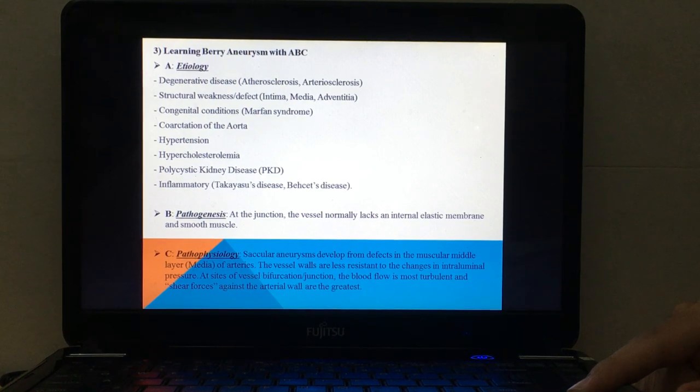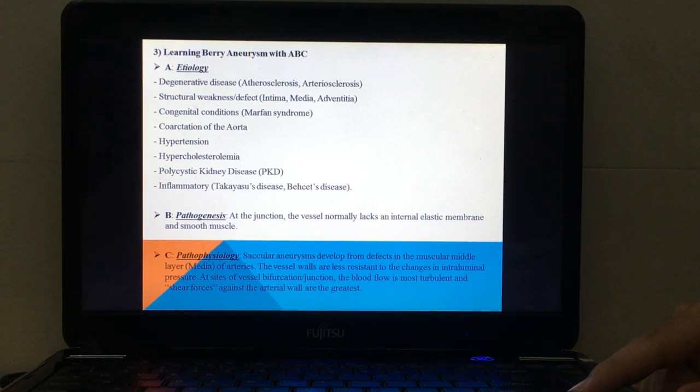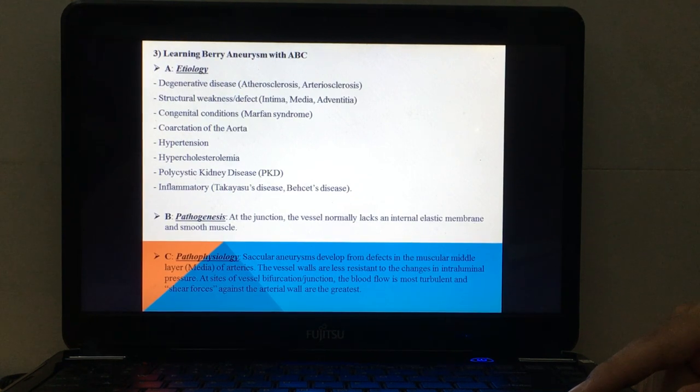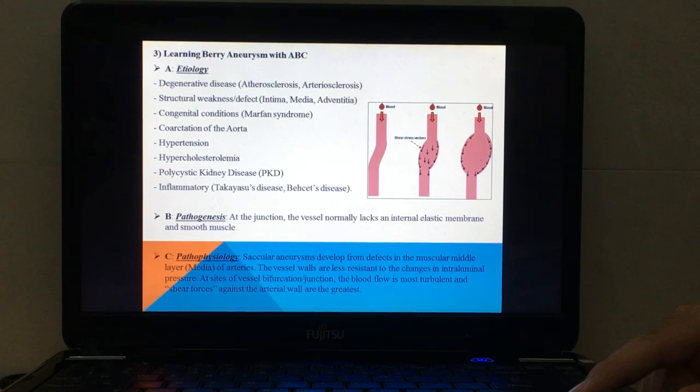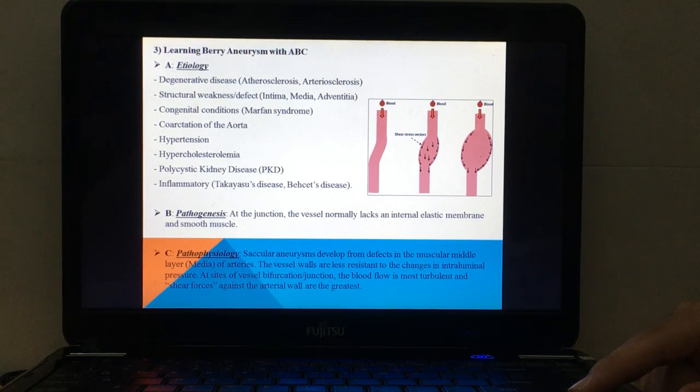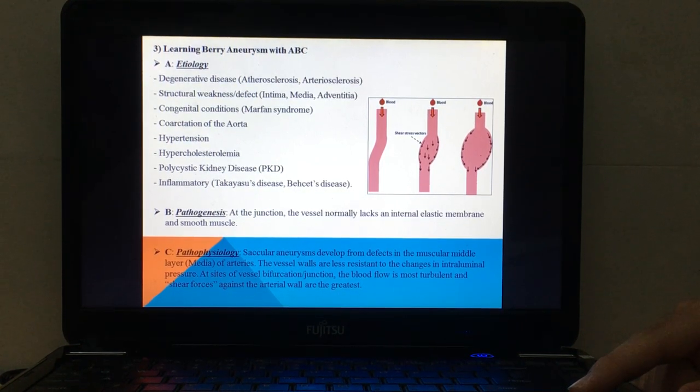About the pathogenesis: at the junction, the vessel normally lacks an internal elastic membrane and smooth muscle. About the pathophysiology...